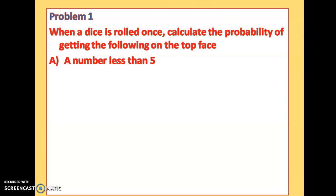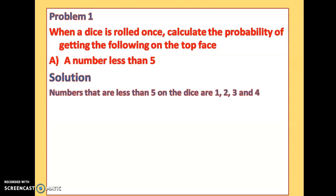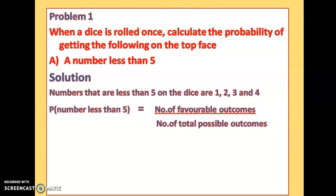For part (a), a number less than 5: there are 6 numbers from 1 to 6 on the die. Pause the video and solve this on your own, then resume. The numbers less than 5 are 1, 2, 3, and 4. So there are 4 favorable outcomes in this event.